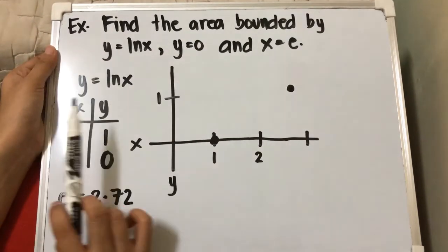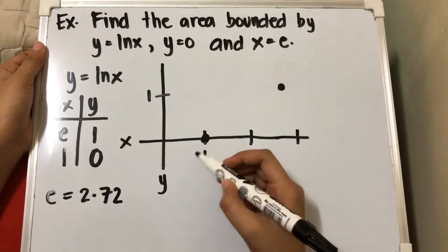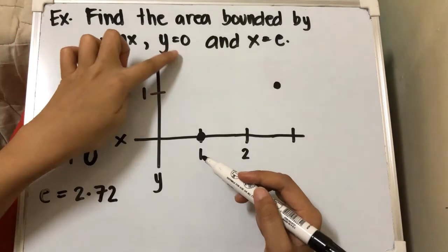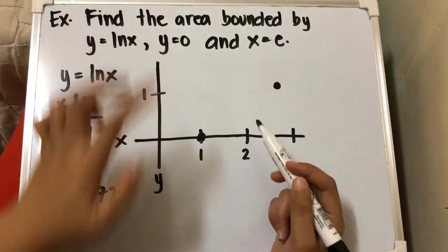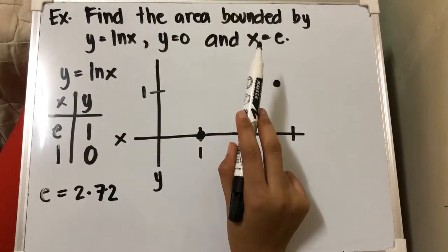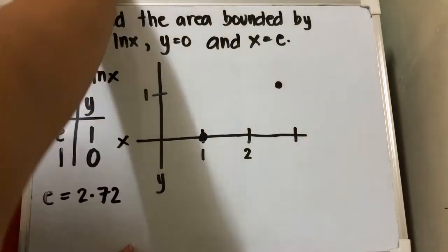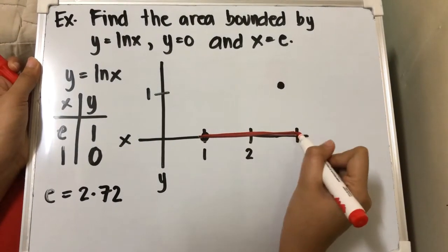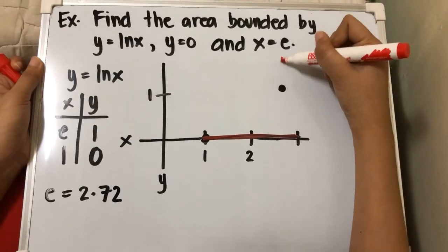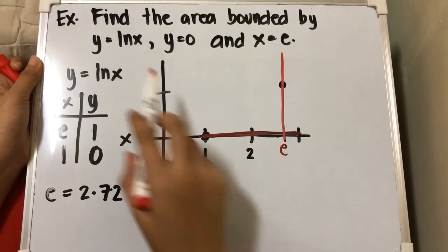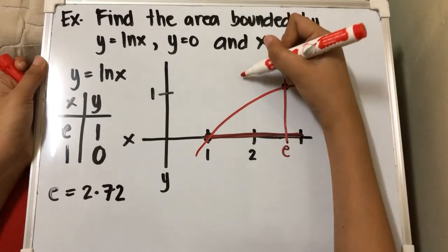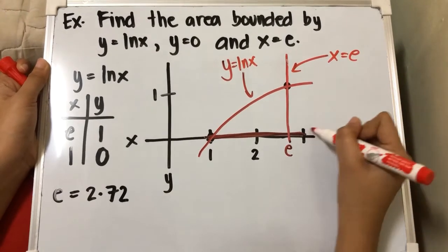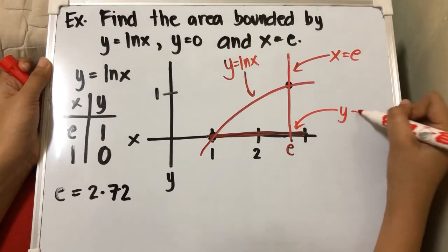It says the area is bounded by y equals ln x, and those points are the values for our y equals ln x. y equals 0 is also a boundary. 'Bounded' means it is the boundary for our area. So y equals 0 is this line, our x equals e is here, and y equals ln x is the curve.